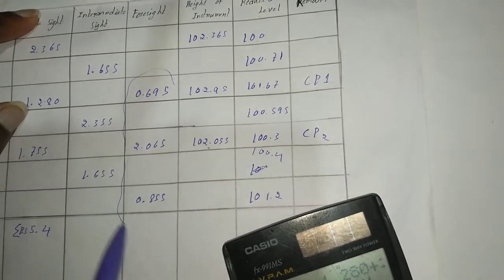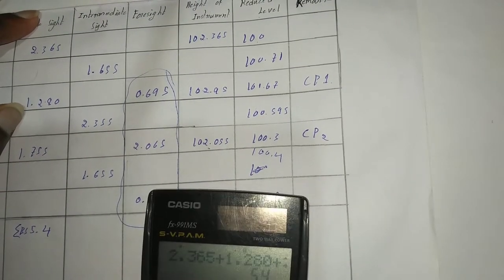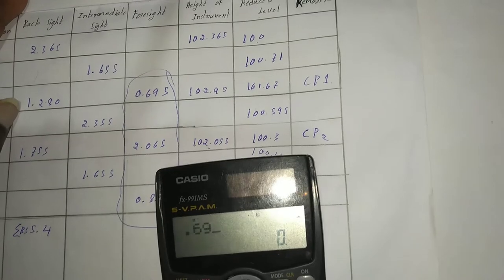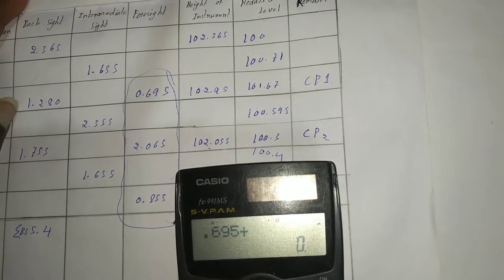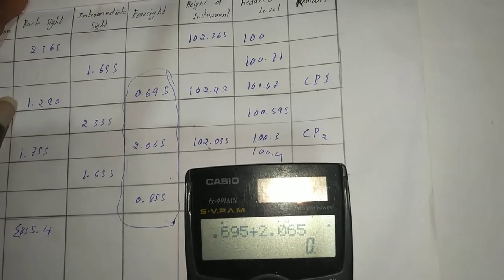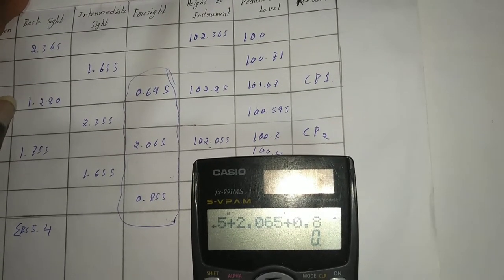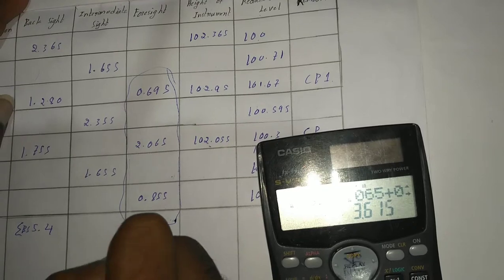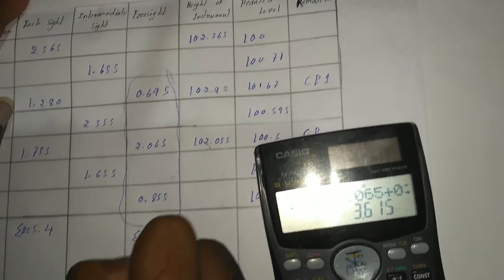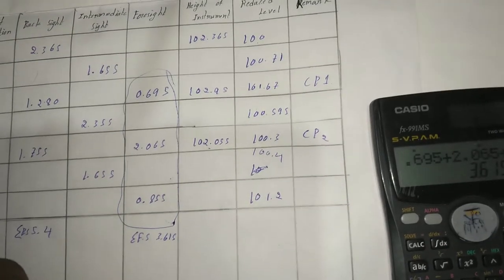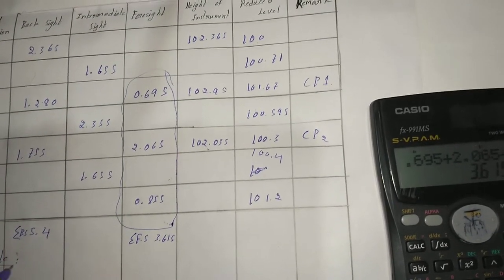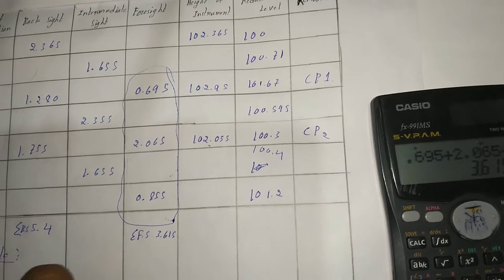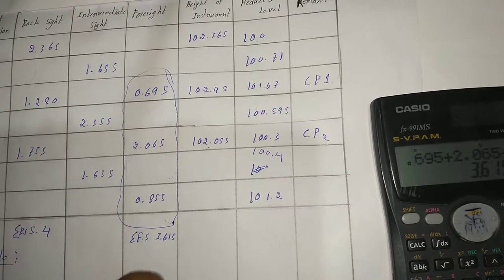And again add the all foresights 3.615. Then our check formula is sigma backsight minus sigma foresight equal to last RL minus first RL.